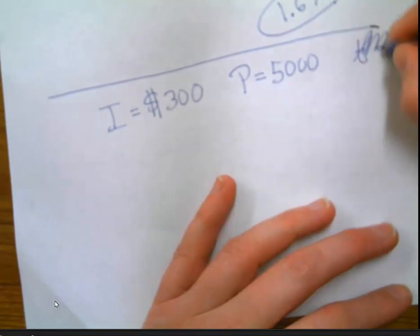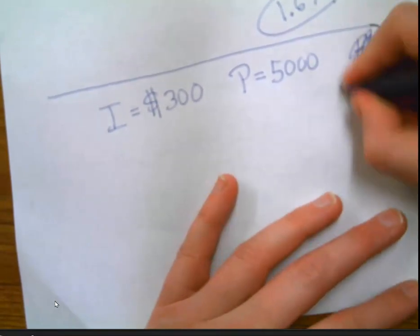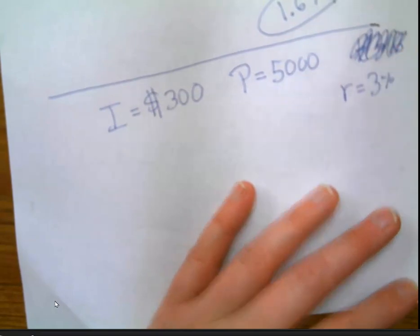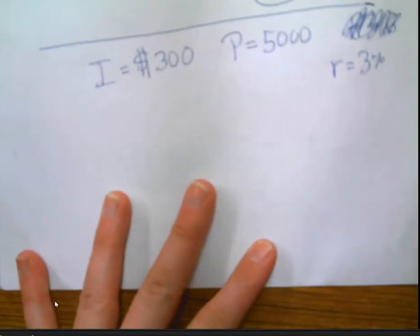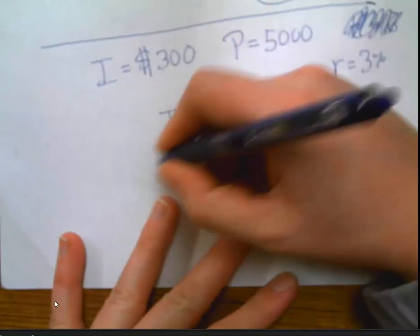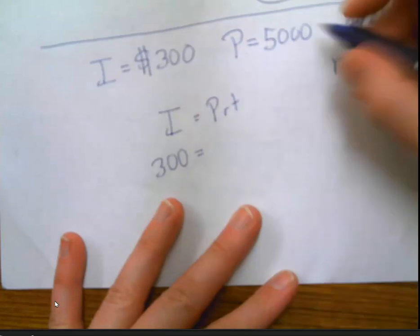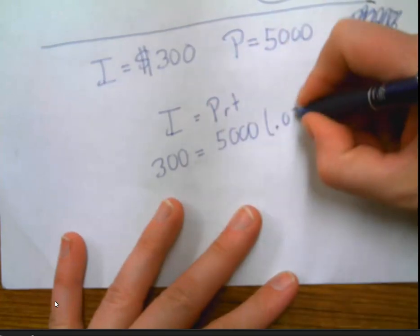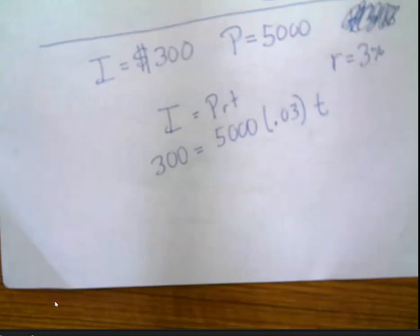Not years. We're trying to find time. I left it at a rate of 3%. I'm making these problems up as I go, if you can't tell. So I would say I equals PRT, 300, equals the principal, which is 5,000, times the rate, which is .03, times the time, and we don't know what the time is.